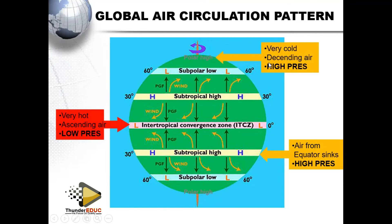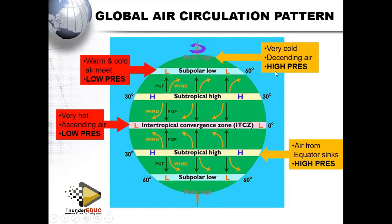At the poles, it is very cold, so air is descending and it creates a high pressure. Here we have warm and cold air meeting at a low pressure — the subpolar low, also called the polar front. The polar Easterlies coming from the cold poles meet the Westerlies from the subtropical high, which are warmer, and these two air masses of different characteristics converge here at low pressure.